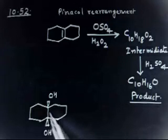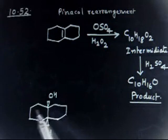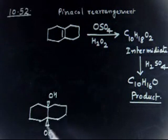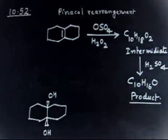This is your C10H18O2. You can check the molecular formula also. You have ten carbons - two, four, six, eight, ten. Sixteen, seventeen, eighteen hydrogens you have. Two oxygens you have. So this is the molecular formula. This is the intermediate.